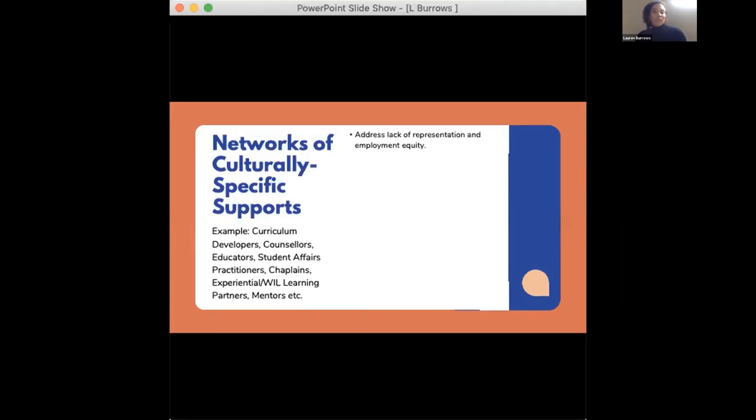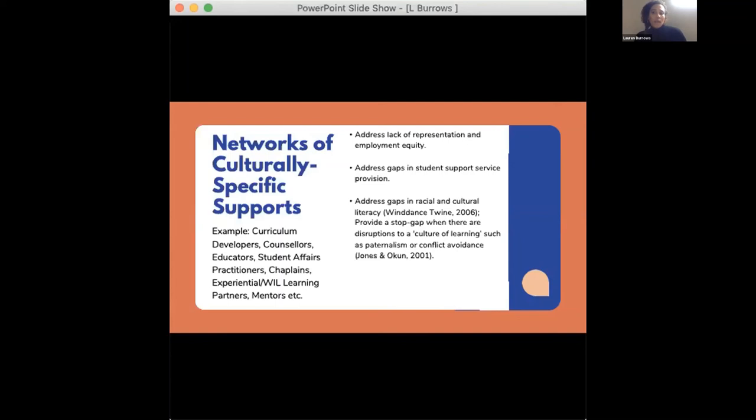When we do this, we do a couple of things. Number one, we address a lack of representation and employment equity that occur in higher education spaces. We address gaps in student support service provision. We address gaps in racial and cultural literacy, the ways that we understand and respond to racism, and we provide a stopgap when there are disruptions to a culture of learning. Disruptions to a culture of learning may include things like paternalism or conflict avoidance when we try and resist those things.